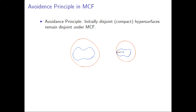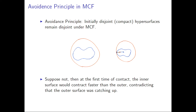Let me include a very important principle in the mean curvature flow. It's a geometric way to visualize the maximum principle for parabolic equations. Suppose you have two disjoint hypersurfaces; if you run them under mean curvature flow, they might become some shape at a later time. But the point is, if they are disjoint initially, then they cannot intersect, because if they were to, the inner surface (the blue one) would have a larger velocity compared to the red one. It's not possible for something with a slow speed to catch up with someone with a larger speed. There's no such nice avoidance principle for Ricci flow, even though you can still talk about maximum principles for the evolution of the curvature.